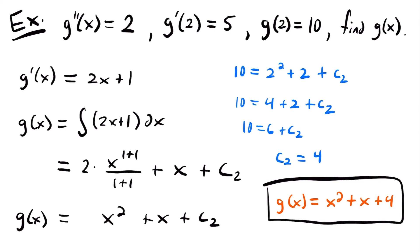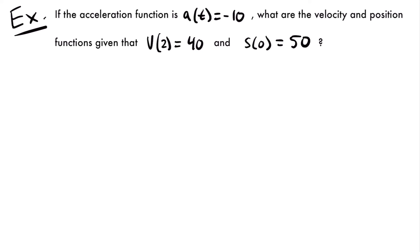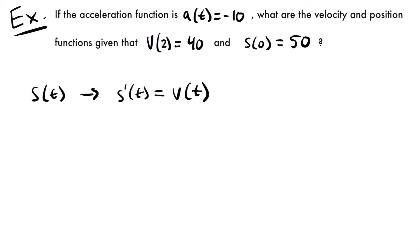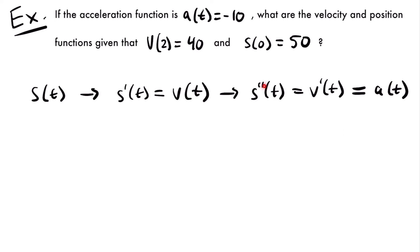Let's look at one more final example. We're going to revisit position, velocity, and acceleration. Recall that if you have a position function s of t, the derivative s prime of t equals the velocity function v of t. If you take another derivative, s double prime of t, or the derivative of the velocity function, that equals the acceleration function. The acceleration function is the second derivative of the position function, or the first derivative of the velocity function.